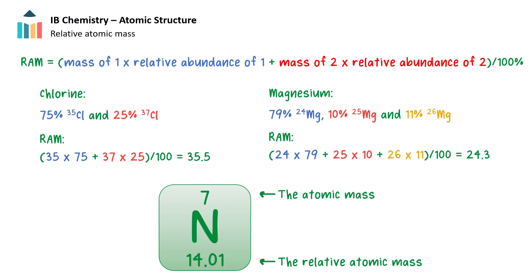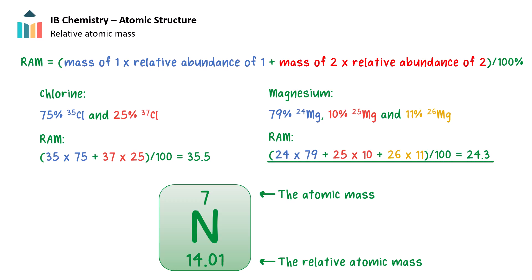If there are more than two naturally occurring isotopes, the calculation is modified to include all of the isotopes in the sum. For example, magnesium consists of 79% magnesium-24, 10% magnesium-25, and 11% magnesium-26. The RAM is therefore equal to (24 × 79 + 25 × 10 + 26 × 11) / 100, which equals 24.3. In the periodic table, each element is represented by a letter symbol with the atomic number on top and the relative atomic mass on the bottom.